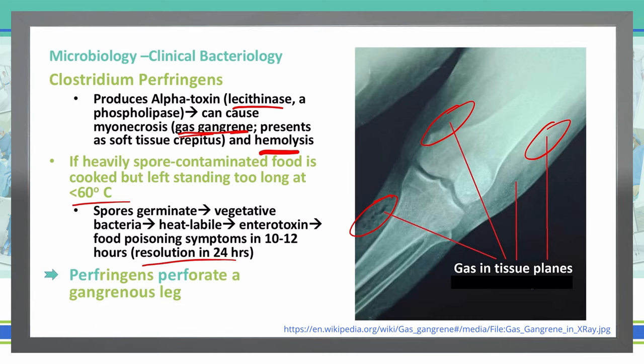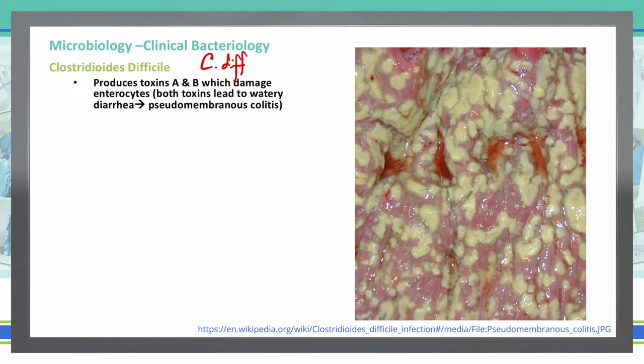The last Clostridia we will discuss is Clostridium difficile, or C. diff. You'll run across this quite often in the wards, as this is a very common nosocomial infection. C. diff produces toxins A and B, which damage the enterocytes in the bowel. Both of these toxins can give us a watery type diarrhea that is known as pseudomembranous colitis.